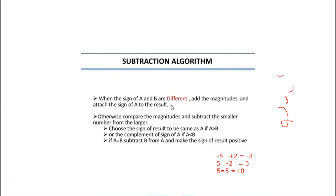When both the signs are the same, you take two values and check the sign. When both signs are the same, you add those values and attach A's sign bit. When both are different, only then do you go for subtraction.